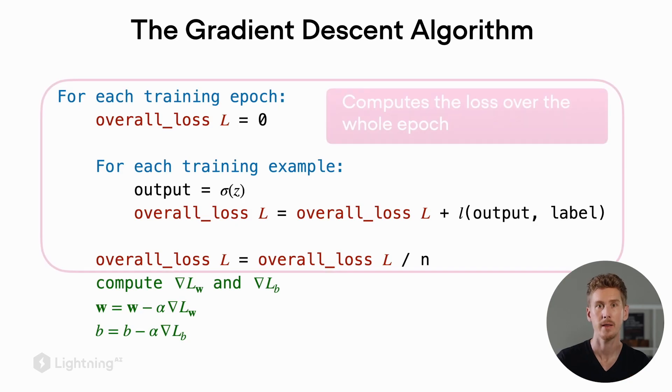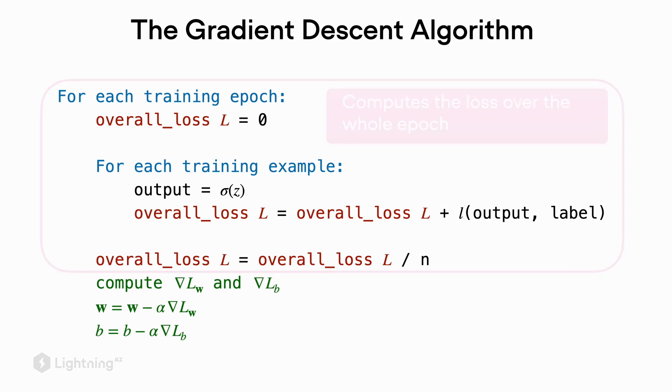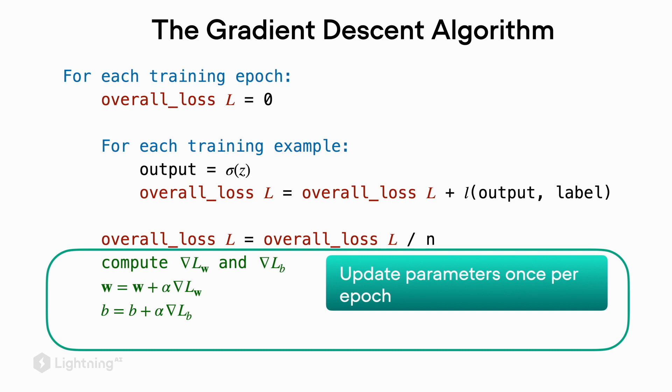One thing I want to highlight though here is that gradient descent computes the loss over the whole training epoch. It's worth noting and you will see later why. The other thing here worth noting is because the loss is based on the whole training epoch, the parameter updates are also based on the whole training epoch. So keep this in mind and then stay tuned for the next video on stochastic gradient descent.